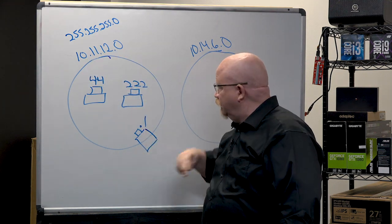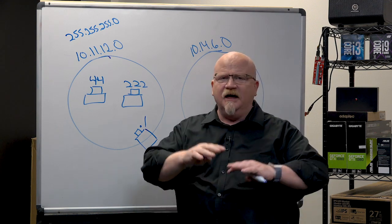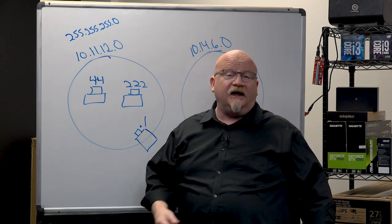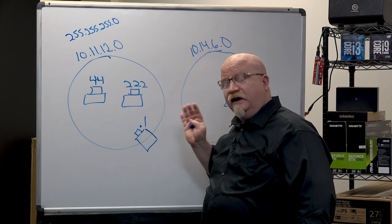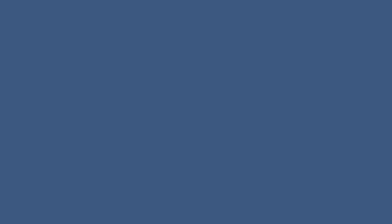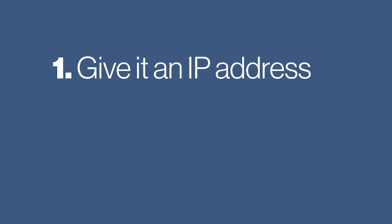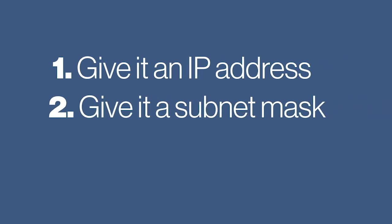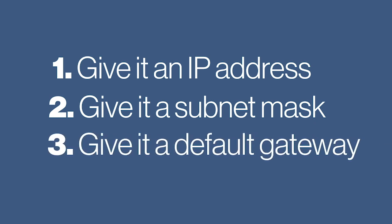So when 10.11.12.44 sees that it can't talk to the remote computer directly, it sends the traffic to 10.11.12.1. This router acts as a gateway to the internet — in fact, that's what we call it: the default gateway. So if you want a computer to be on the internet, you need to give it: number one, an IP address; number two, a subnet mask; and number three, a default gateway. The subnet mask tells your computer whether it's a local call or a long-distance call — if it's long-distance, it sends it to the default gateway.